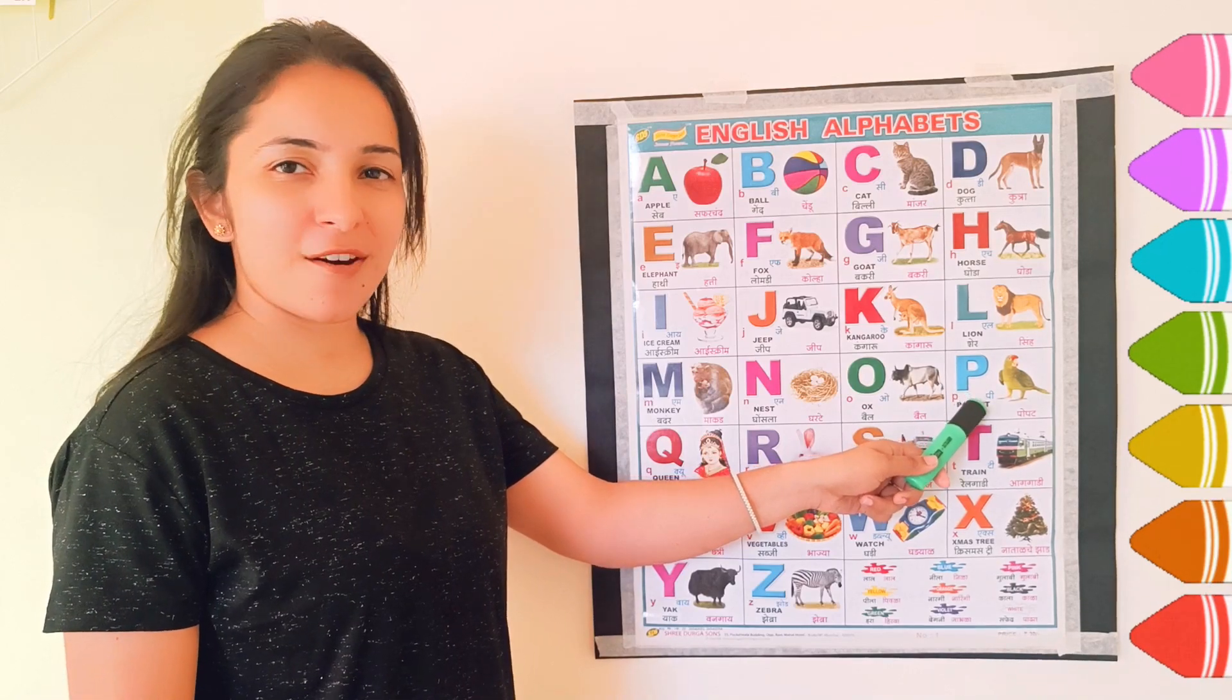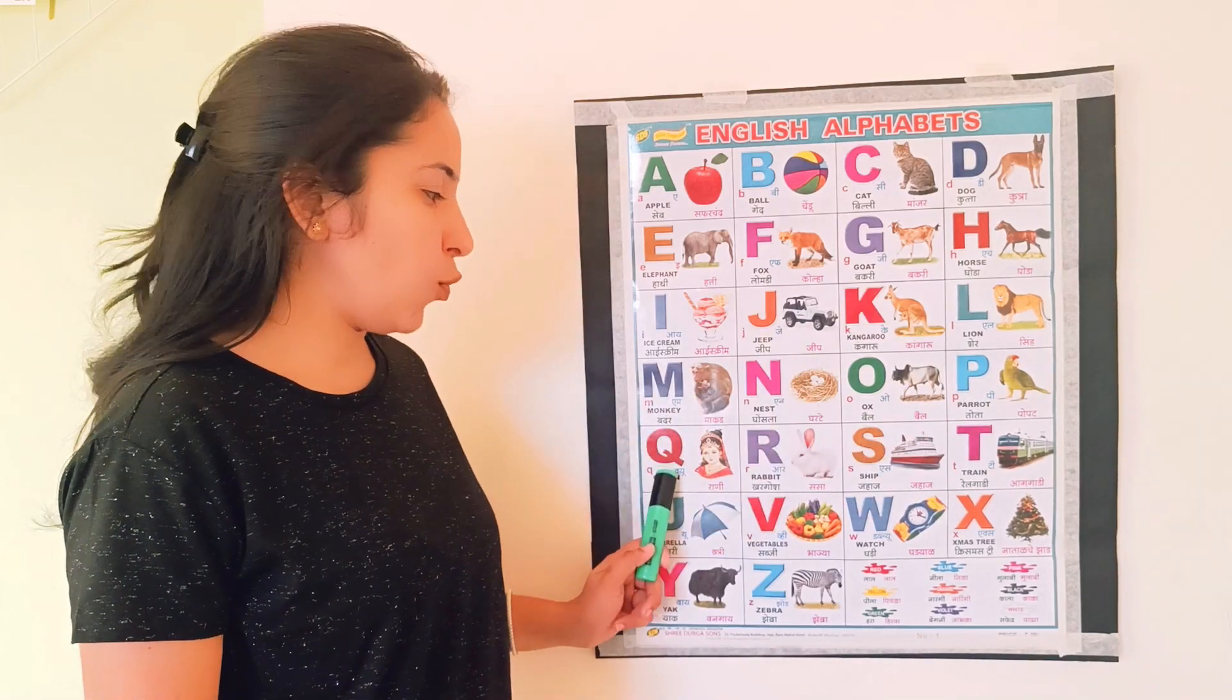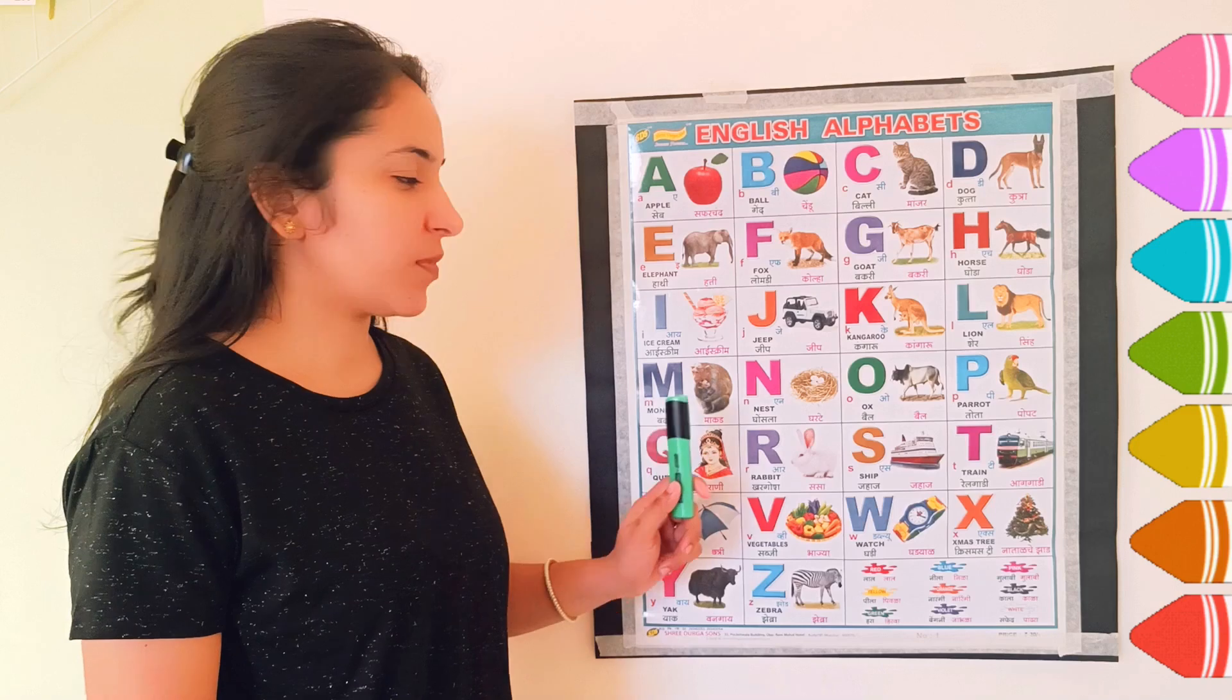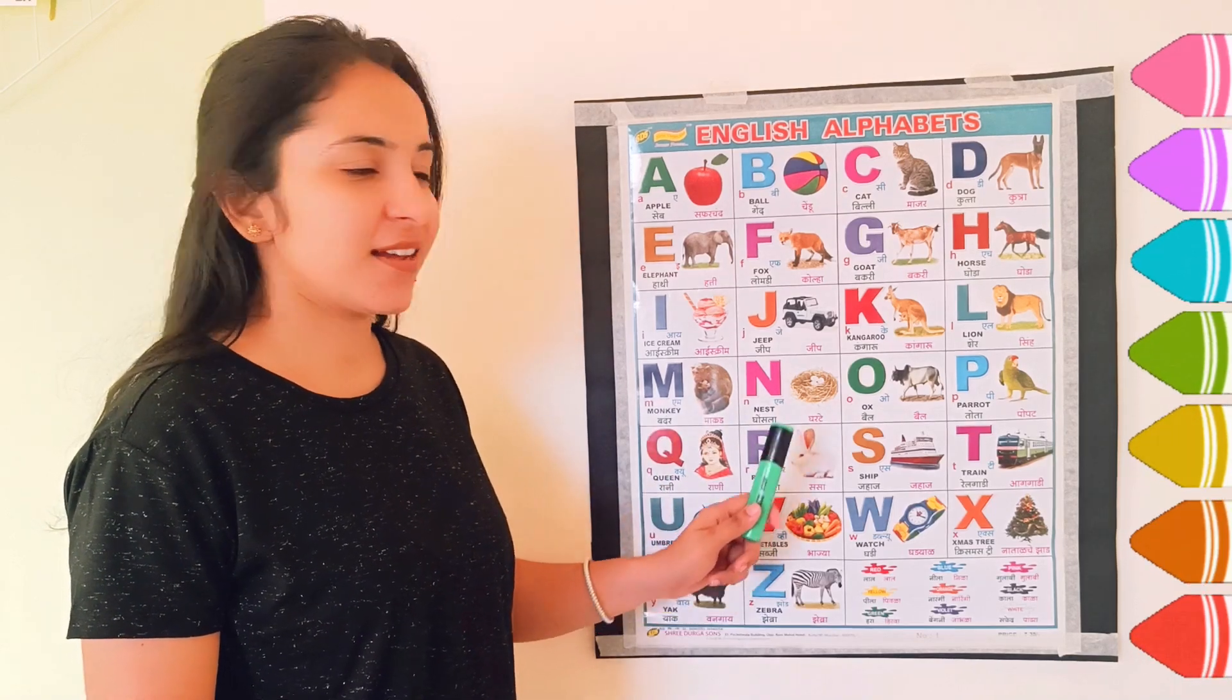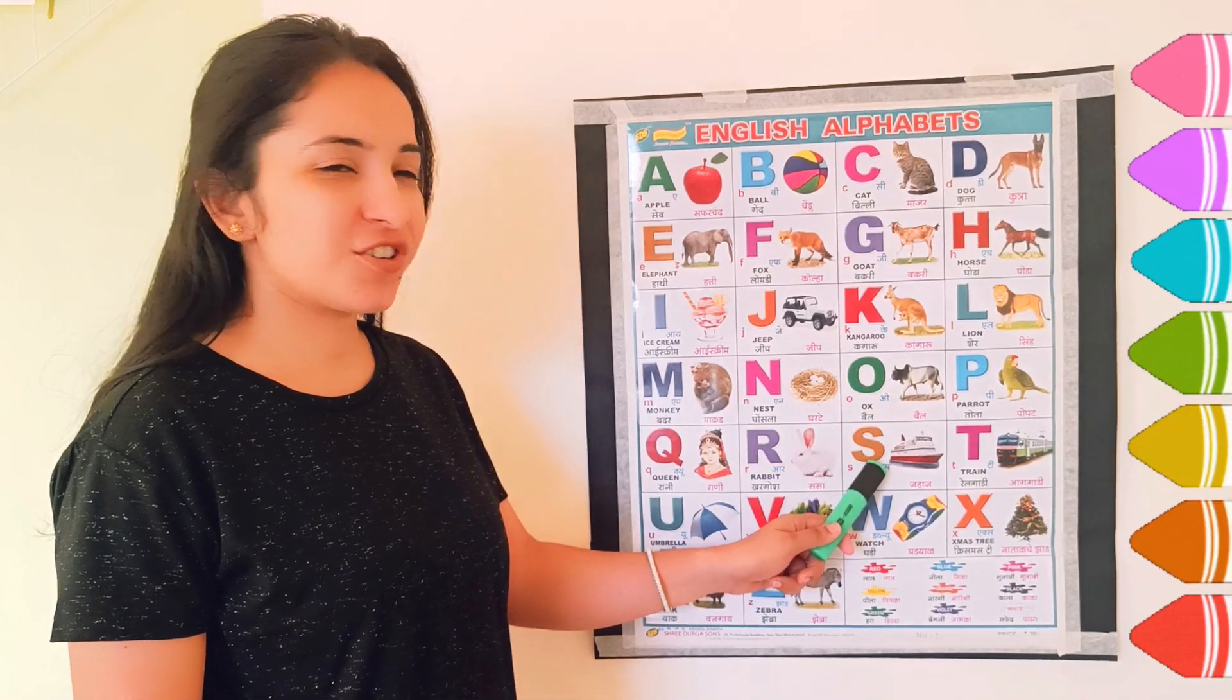P, P for parrot. Q, Q for queen. R, R for rabbit. S, S for ship.